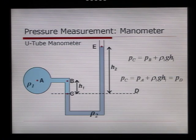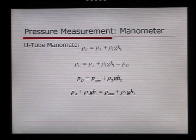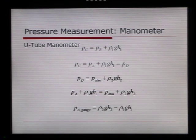So to continue our calculations on the next slide, we have that the pressure point D is equal to the atmospheric pressure, plus rho 2 G H2. Combining those, we get P A, plus rho 1 G H1, is equal to P atmosphere, plus rho 2 G H2. Which gives us our answer that the gauge pressure at point A is equal to rho 2 G H2 minus rho 1 G H1. To get the absolute pressure, you'd simply add atmospheric pressure.